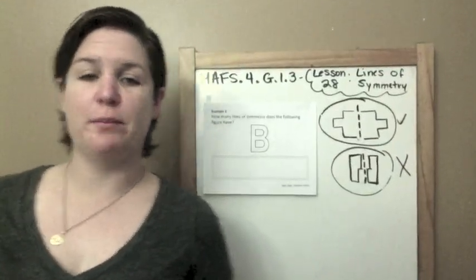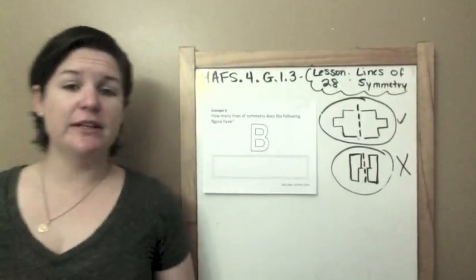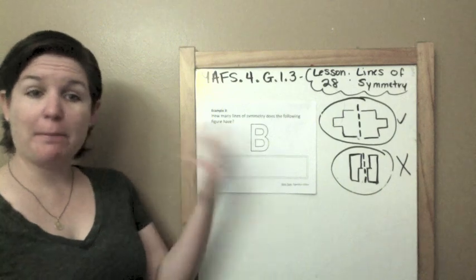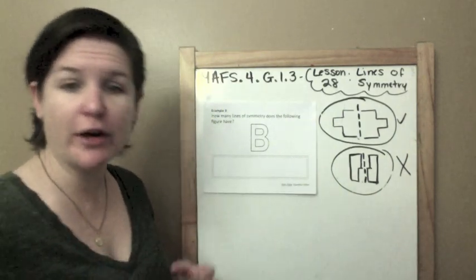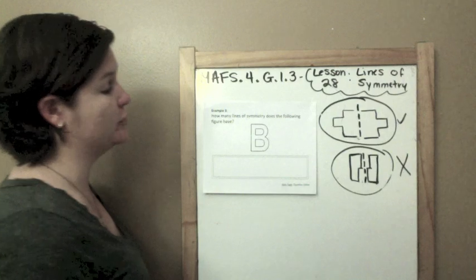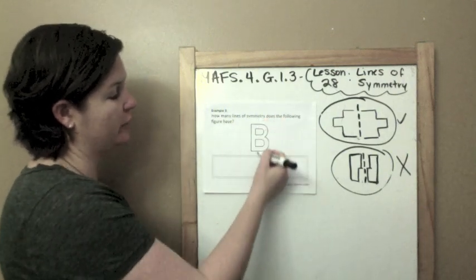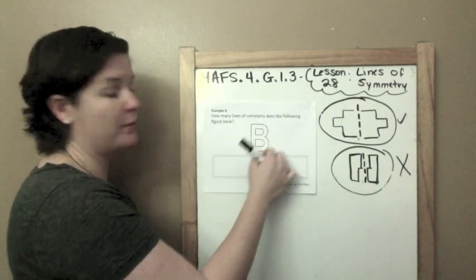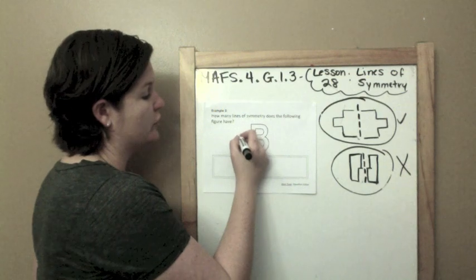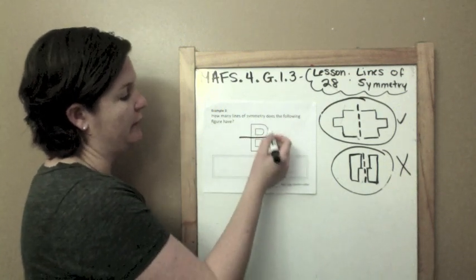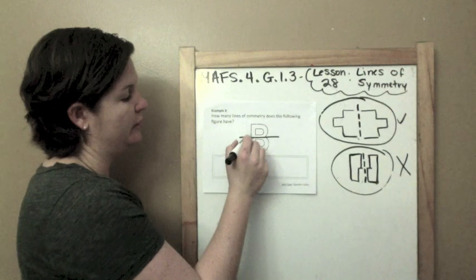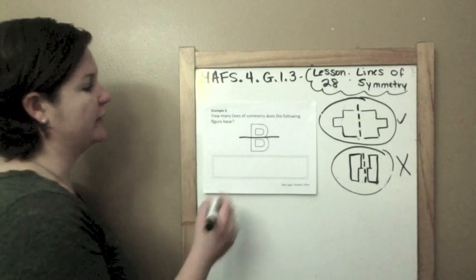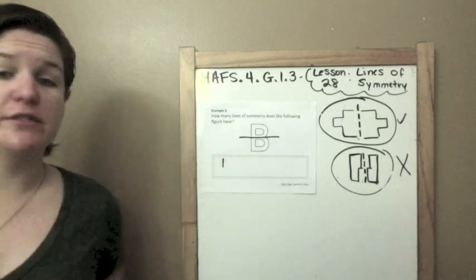Moving right along to example number three. How many lines of symmetry does the following figure have? This is the letter B. And no, we are not in kindergarten. I'm not here to teach you your letters, but I am here to teach you about lines of symmetry. So I could not go down the middle with my line, because then I would have a straight line on one side, and then my curvy bumps on the other side. But I could go straight across. If I did that, I would have my hump here, my hump here, my straight line here, my straight line here. Everything, if I folded it, would match up perfectly. So this figure has only one line of symmetry.